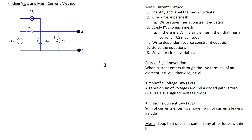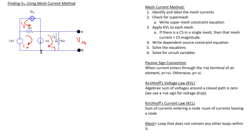We can also use the mesh current method to find V_Thevenin, which is the open circuit voltage. The main steps in applying the mesh current method are shown here. We have three meshes in this circuit, labeled IX, IY, and IZ — following the direction of the dependent source for IZ. Whenever there are current sources in the circuit, they open up the possibility of a super mesh. This dependent current source is only present in one mesh, but the independent current source is present between two meshes. Therefore, we need to form a super mesh.